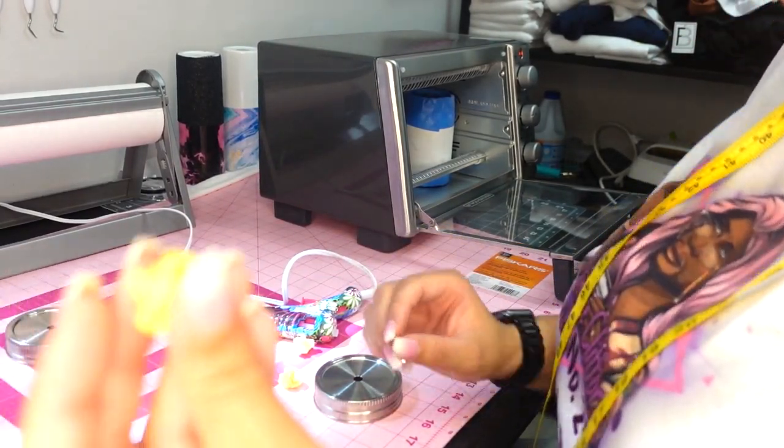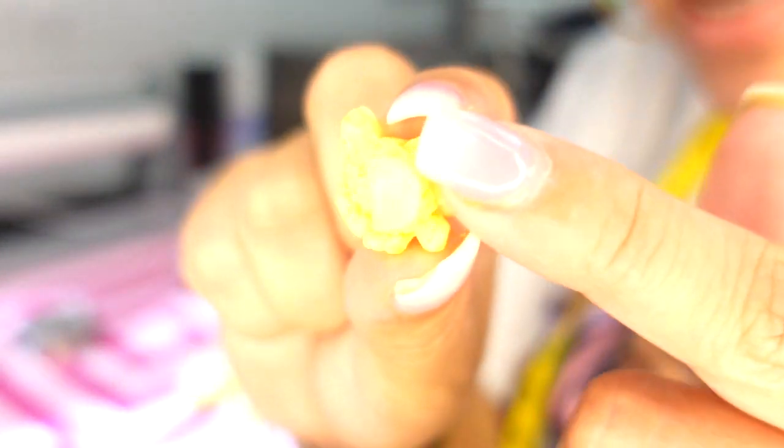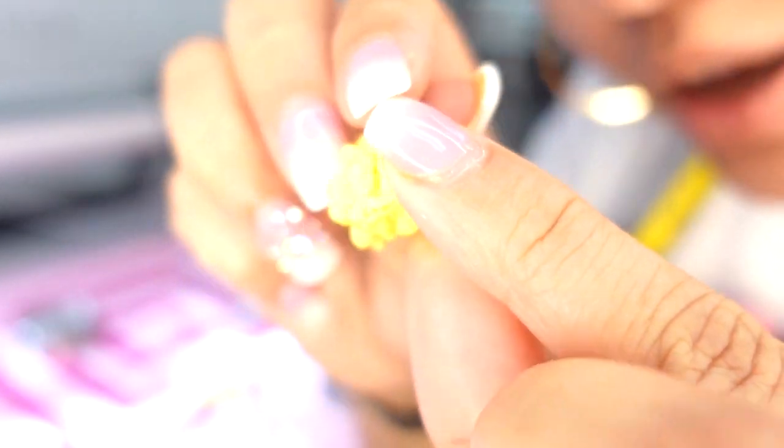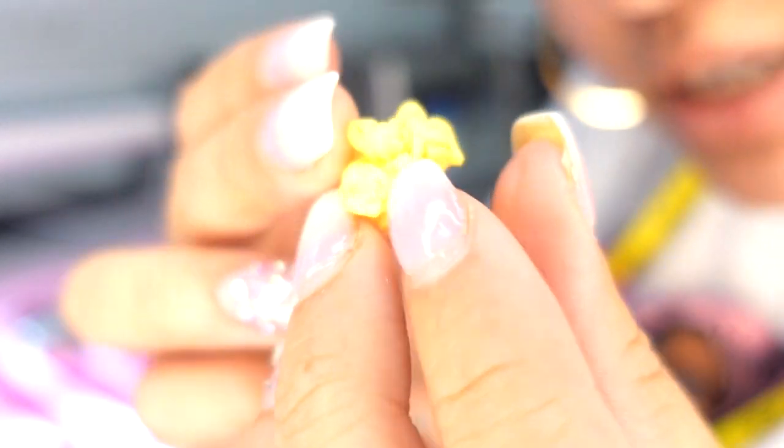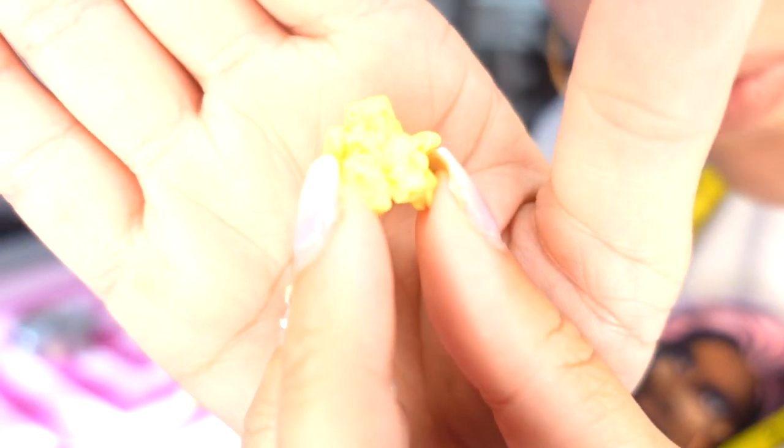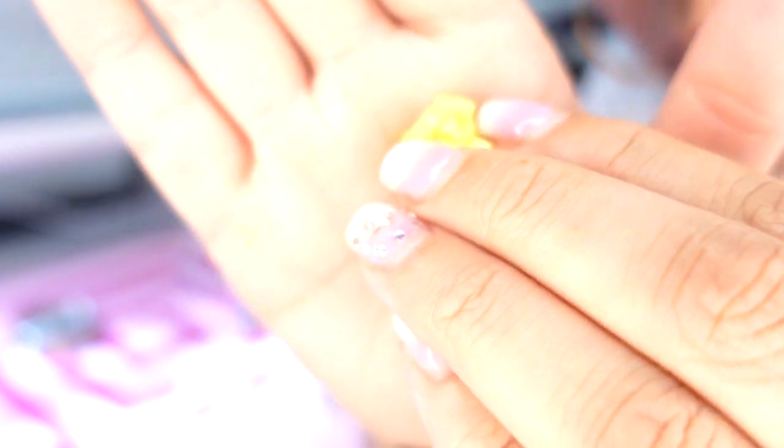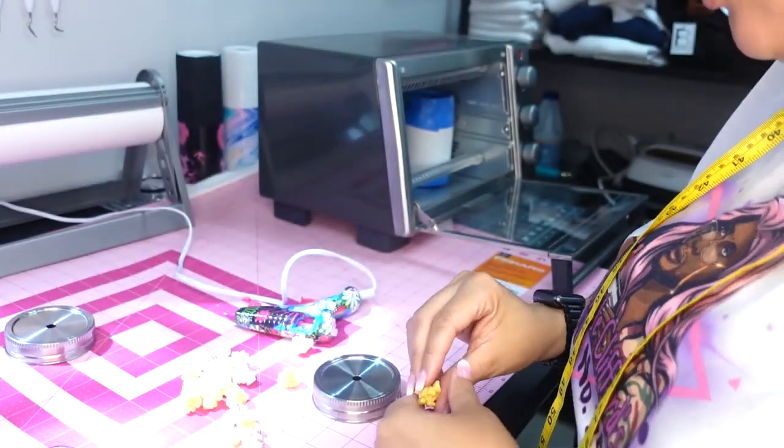So these little popcorn pieces, they do have little flat sides on them. I don't, hopefully you guys can see that. If you see this right here, it's flat, right? Whereas the rest of it isn't, but this little part right here is flat. That's where I'm going to be putting the glue, on that flat piece, on the popcorn. I'm going to be putting the glue right there to put it onto the topper.